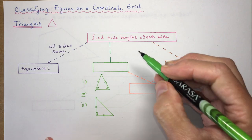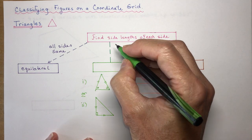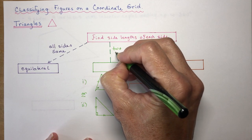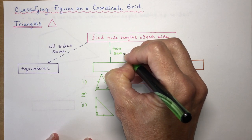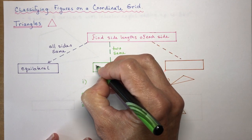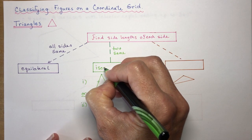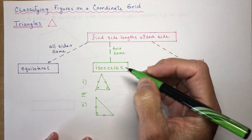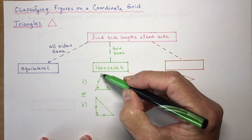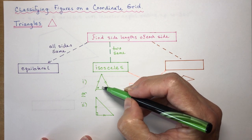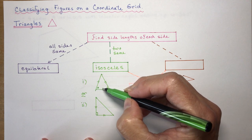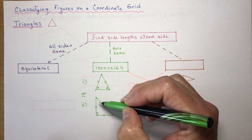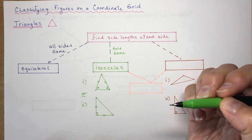If you find the side lengths and only two are the same, you have an isosceles triangle. An isosceles triangle can either have two equal sides with two equal angles, or it can be a right isosceles triangle that also has a right angle in it.